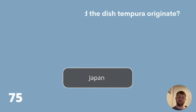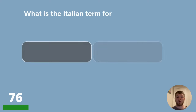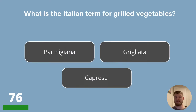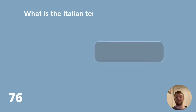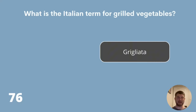Question 76. What is the Italian term for grilled vegetables? If you wanted grilled vegetables in Italy, would you ask for Parmigiana, Grigliata or Caprese? The answer is Grigliata.